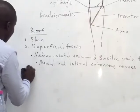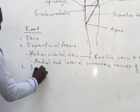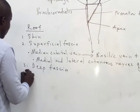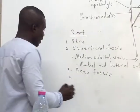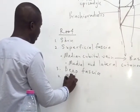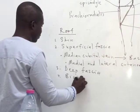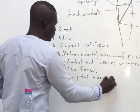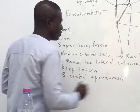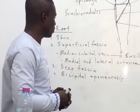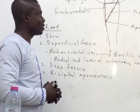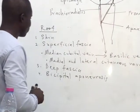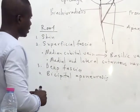The next layer we find will be the deep fascia. If you have a superficial fascia, you have a deep fascia. Then the fourth one is what we call the bicipital aponeurosis. This is a broad, flat form of tendon, which is actually coming from the biceps tendon — the bicipital aponeurosis.